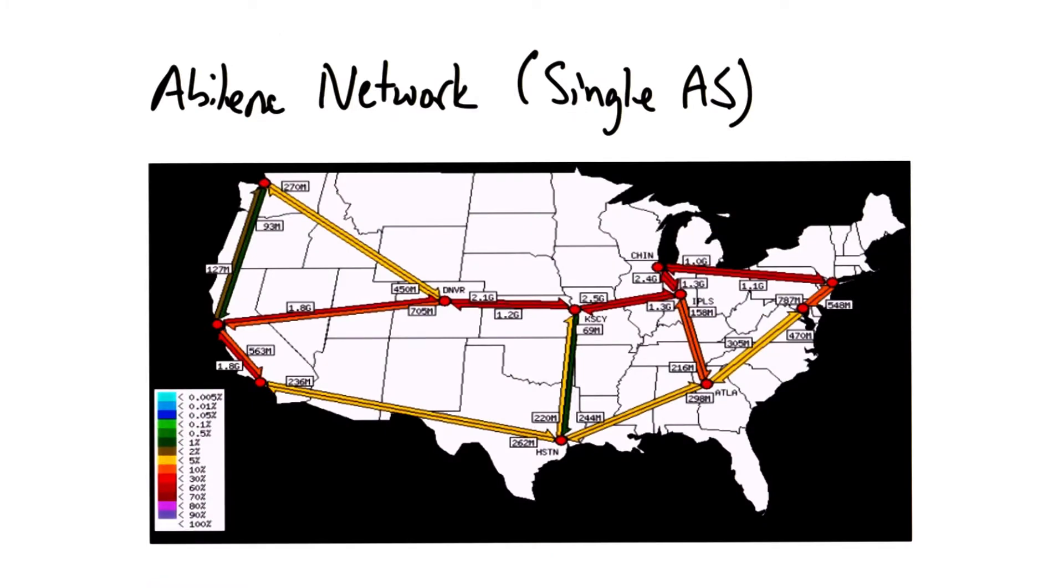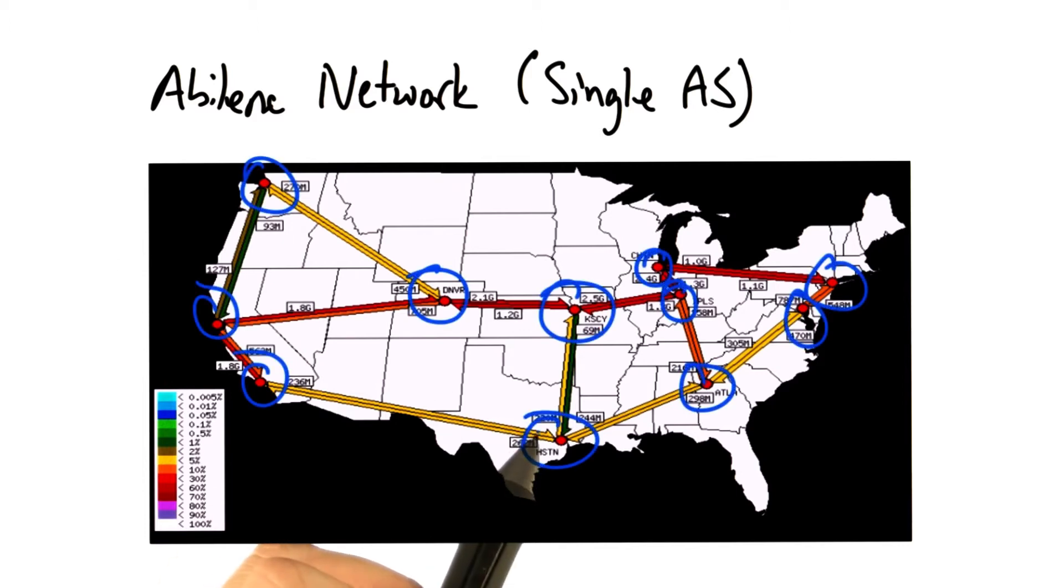Here's an example of a single AS topology, which is the Abilene network, which is a research network in the United States. Each of these locations would be considered a POP, and each of these POPs may have one or more edges between them.